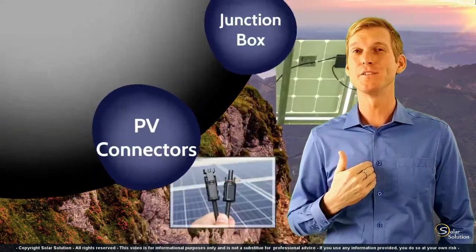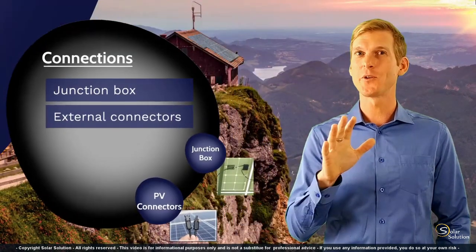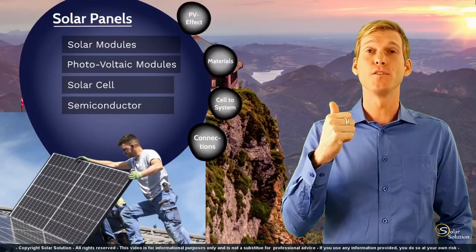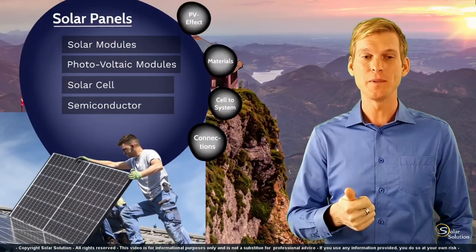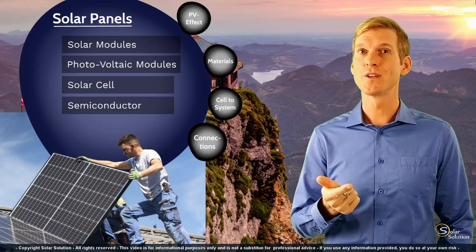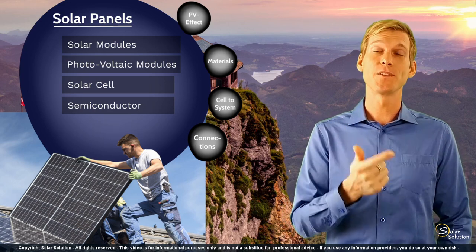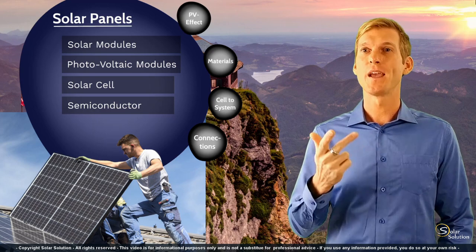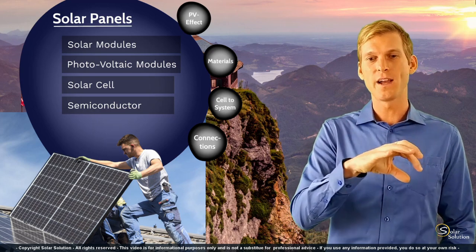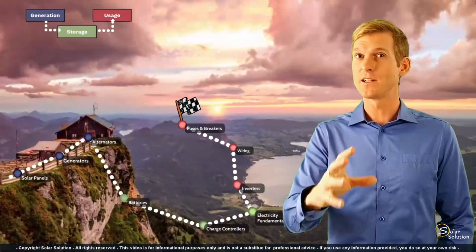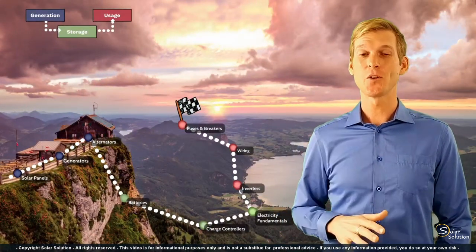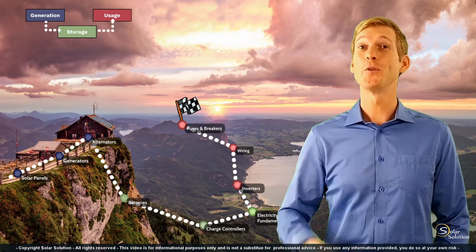Well done for staying with me. You now understand quite a bit: the photovoltaic effect and what it means, the different kinds of materials used for creating solar cells and modules, and how you can take a cell and wire it in different ways to create an overall solar system. This concludes the topic on solar panels — I hope you enjoyed it.